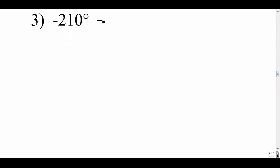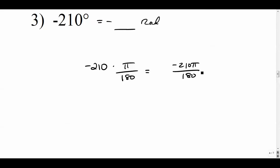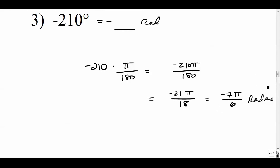The same strategy works for negative values. Converting -210 degrees to radians: multiply by pi over 180. We get -210pi over 180. Remove the zeros: -21pi over 18. Both are divisible by 3, giving -7pi over 6 radians. So -7pi over 6 is the same as -210 degrees.